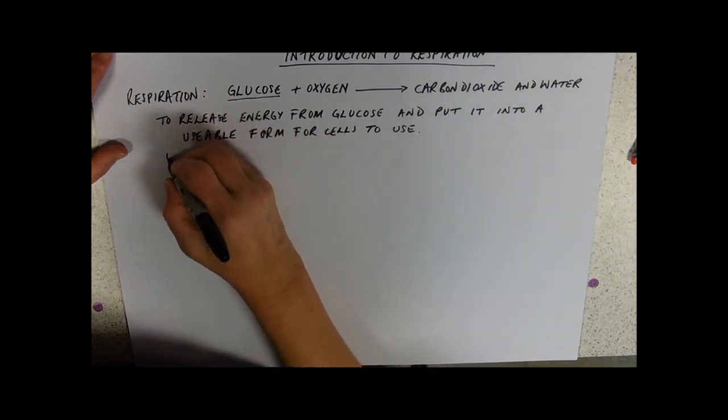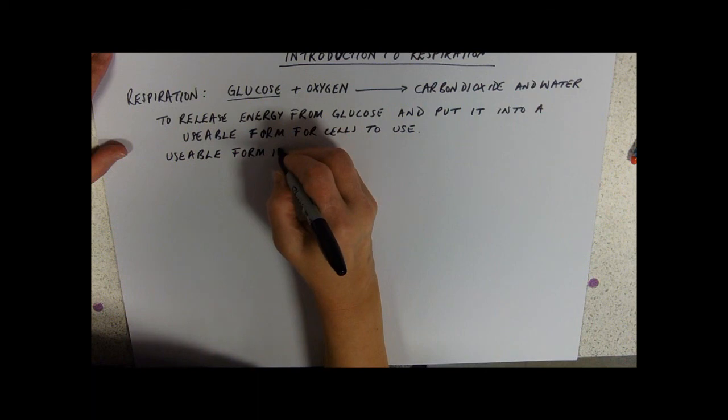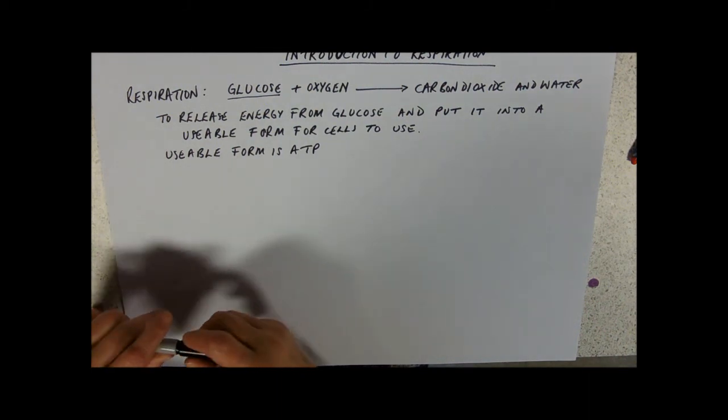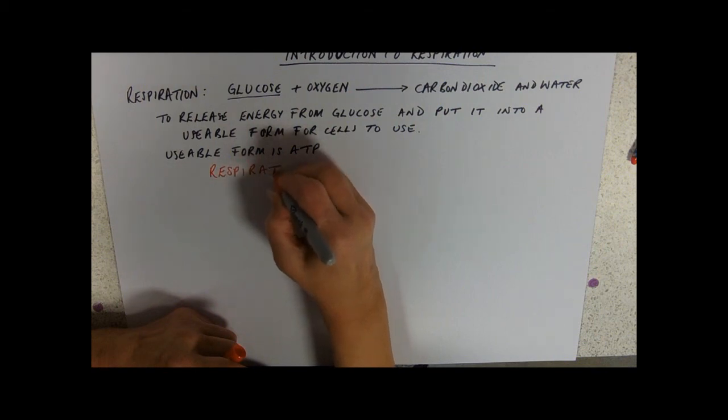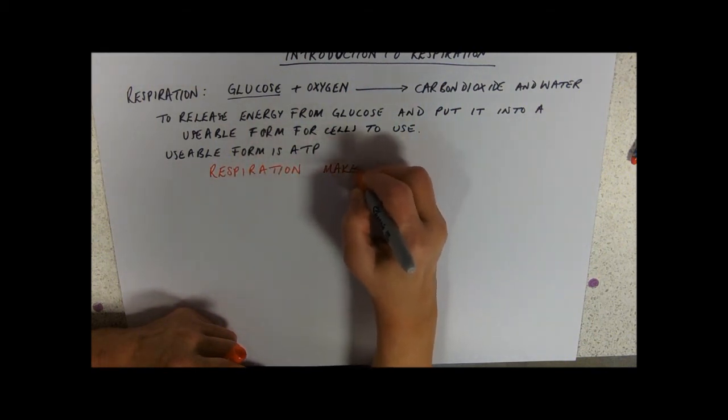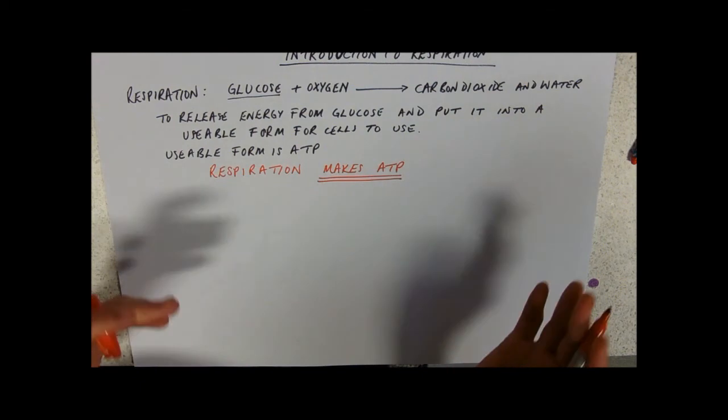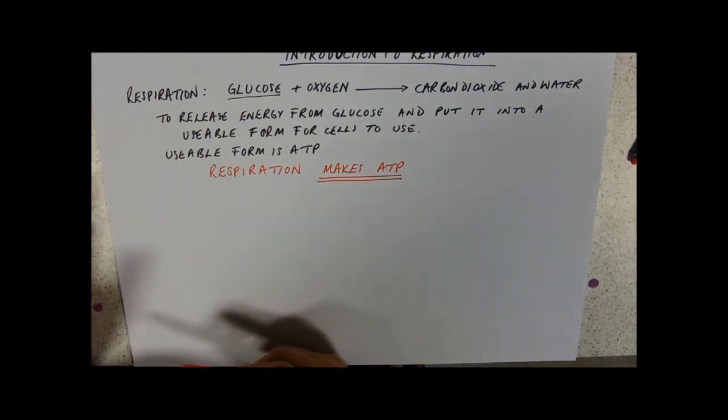That usable form is our universal energy currency. And I want to switch colors now because this is so important and it is the main thing that students get wrong in exams. Respiration makes ATP. That's the whole idea: you get all of the energy out of the glucose and you use it to make a number of molecules of ATP.